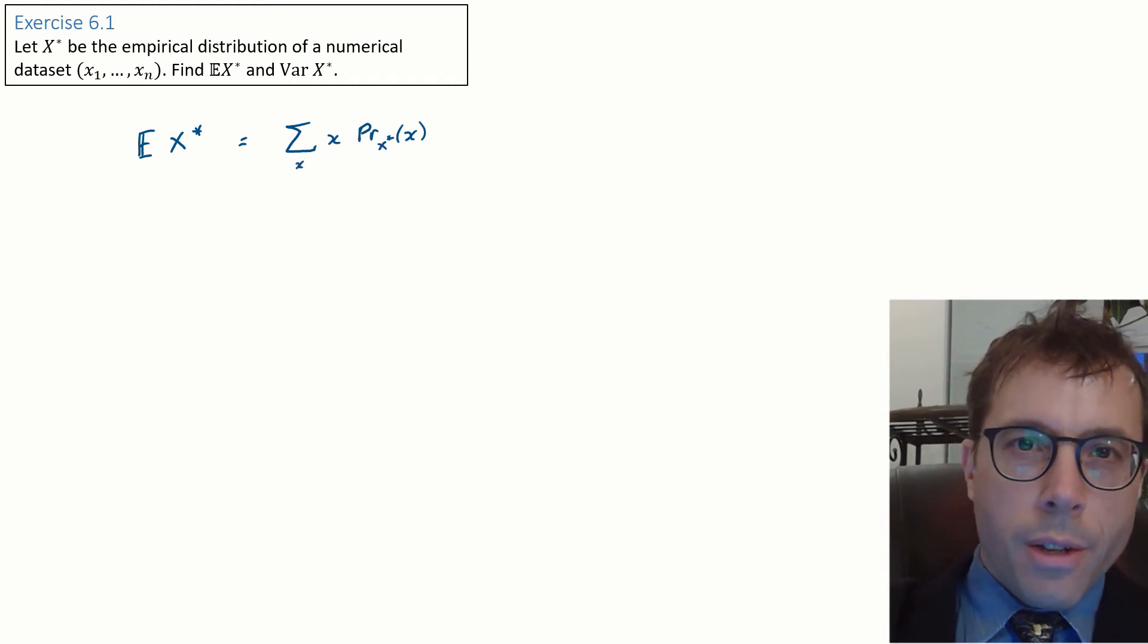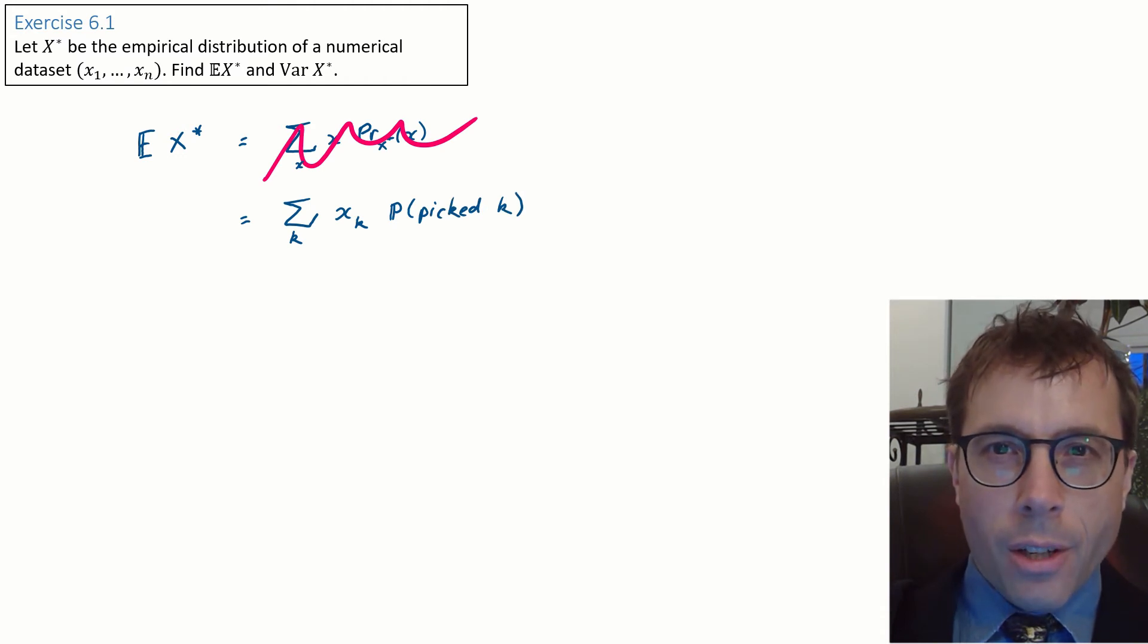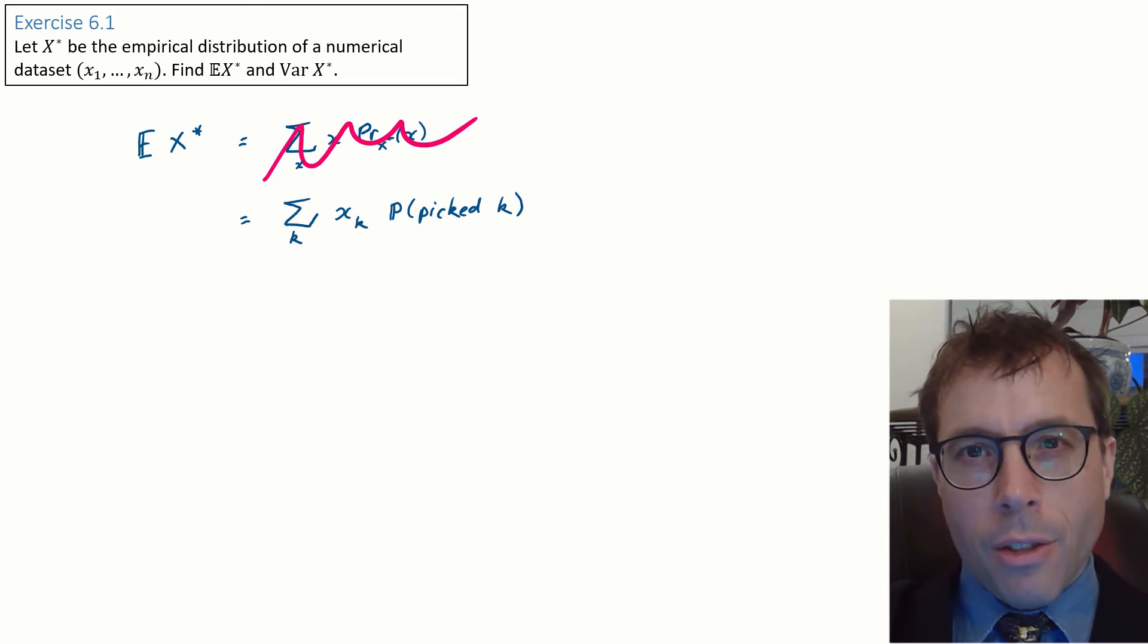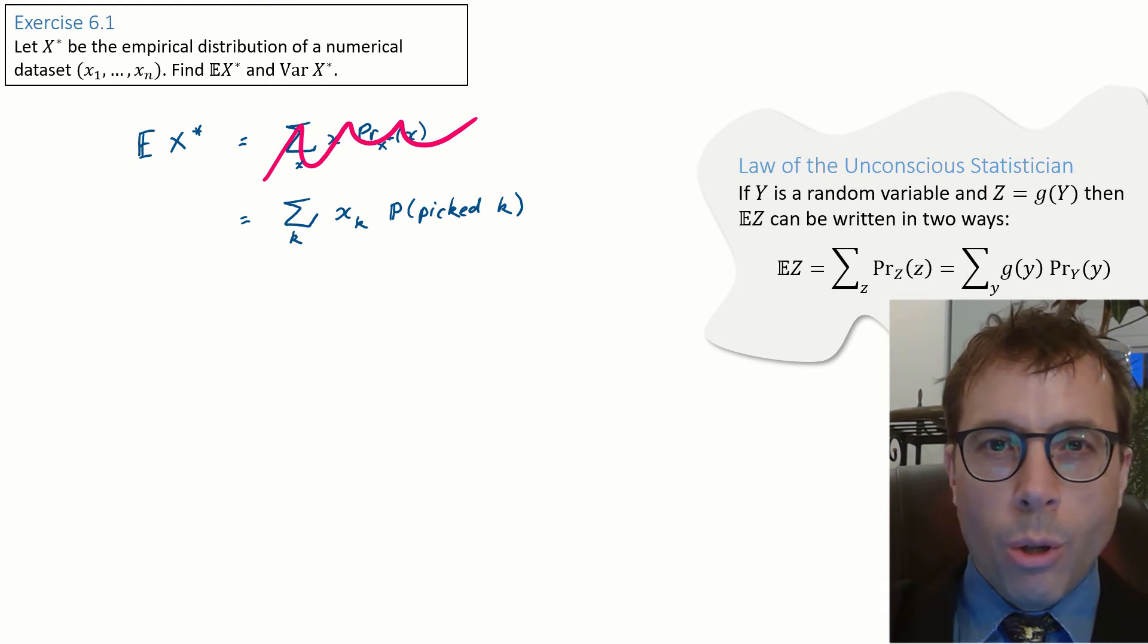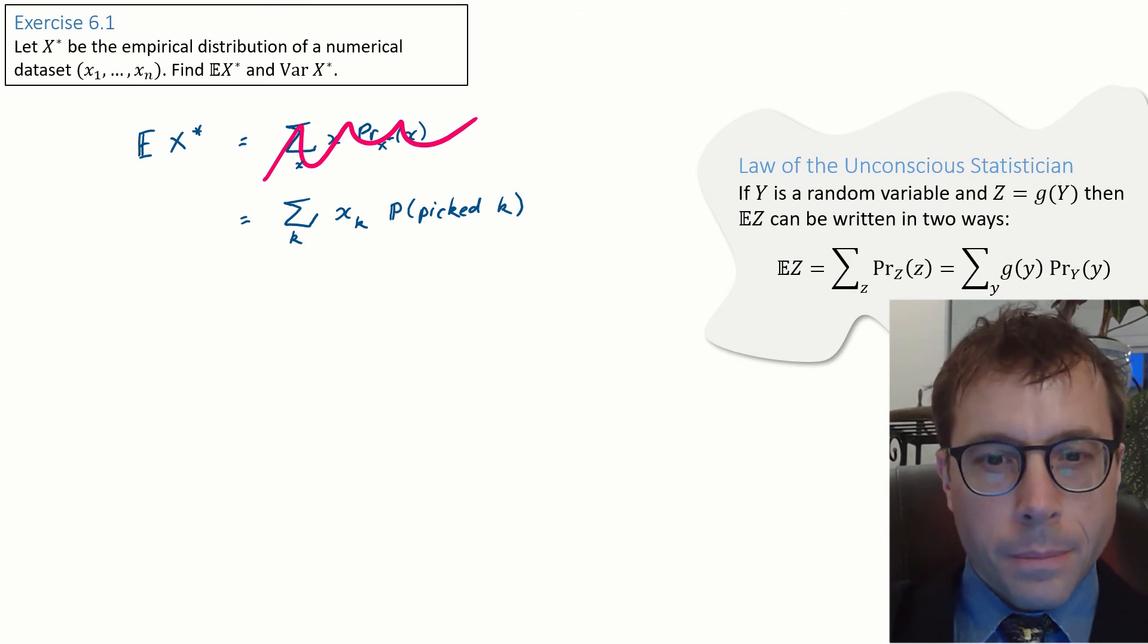OK, let's just write out the definition of expectation. Actually, on second thoughts, let's write it another way. We can say that x star is found by first picking a random index k and then returning the kth item in the dataset. So we can write the expectation as a sum over k rather than a sum over x. This is actually an application of the law of the unconscious statistician. X star can be thought of as a function of k, so we can write its expectation in two ways, either summing over x or summing over k. And obviously, what we've found is just the sample mean.